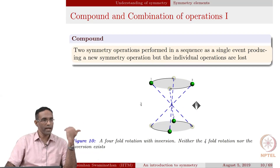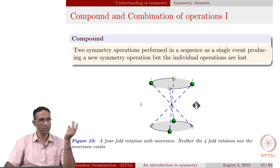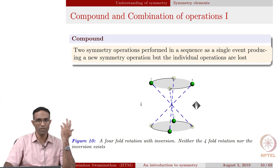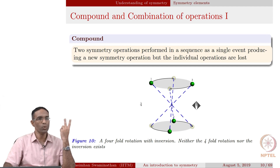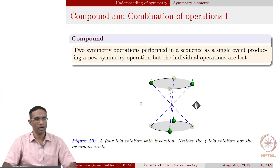So we talked about separate symmetry operations such as rotation, mirror, and inversion. Now we will talk about compound symmetry operations, which involves combinations of two operations — like rotation and inversion, or rotation and mirror.